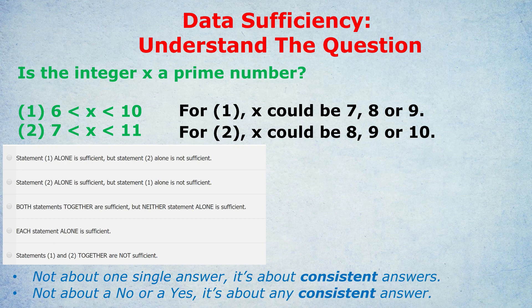Statement 2 gives us a consistent answer. The x is not prime. Therefore, statement 2 is sufficient. And the answer would be B. Statement 2 alone is sufficient. But statement 1 alone is not sufficient. I don't care if the answer happens to be no. No, x is not a prime number. Or yes, x is a prime number. I'm just looking for a consistent answer.